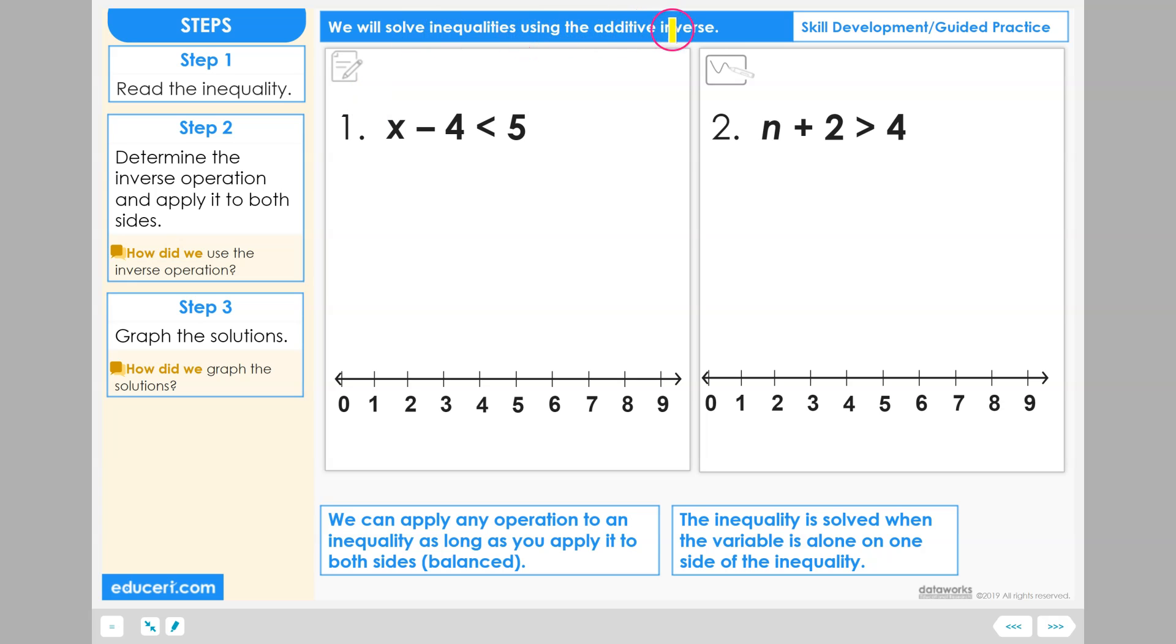Let's solve inequalities using the additive inverse. Problem number one. Step one. Read the inequality. X minus four is less than five.